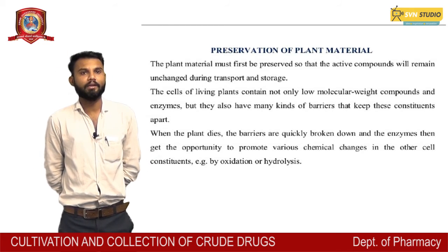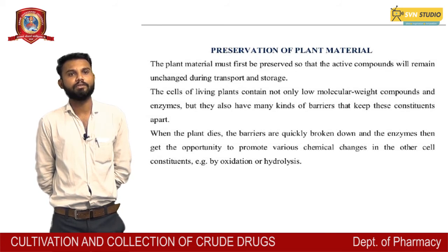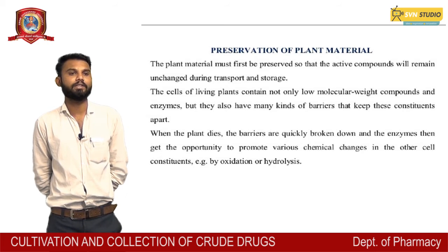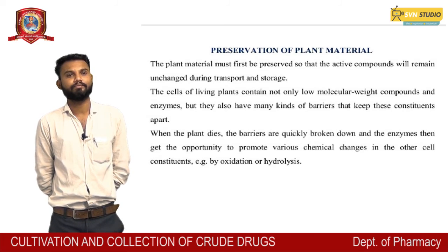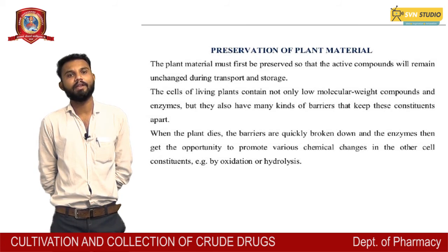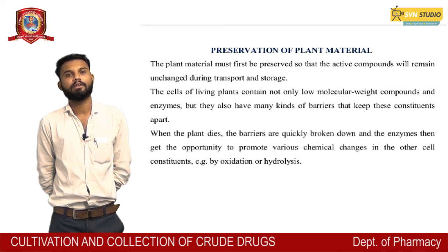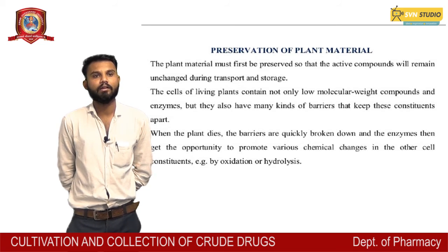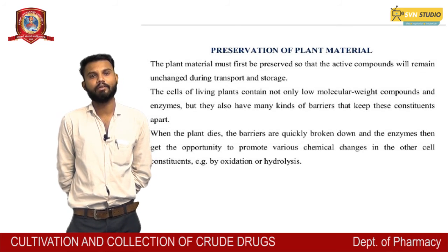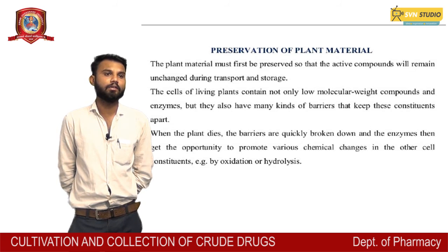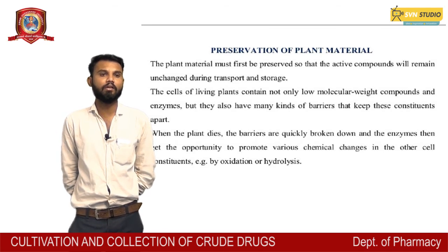Preservation of plant material: The plant material must first be preserved so that the active compounds remain unchanged during transport and storage. The cells of living plants contain not only low molecular weight compounds and enzymes, but also many kinds of barriers that keep disease constituents apart. When the plant dies, the barriers are quickly broken down and enzymes then get the opportunity to promote various chemical changes in other cell constituents, e.g., oxidation or hydrolysis.